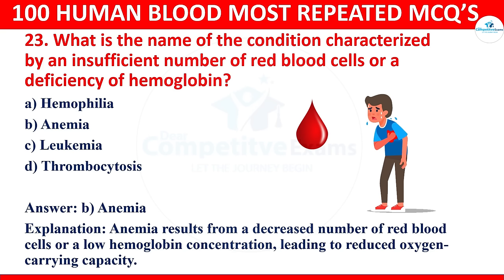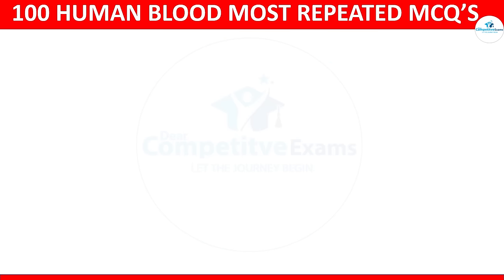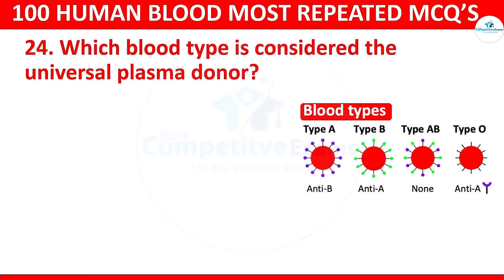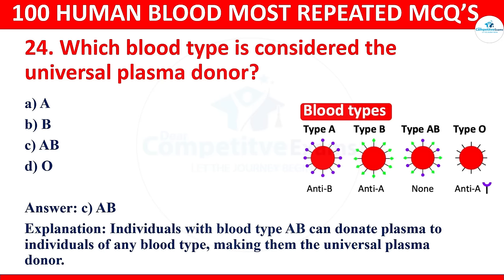Question 24: Which blood type is considered the universal plasma donor? Options: A, B, AB, or O. The correct answer is AB. Individuals with blood type AB can donate plasma to individuals of any blood type, making them the universal plasma donor.